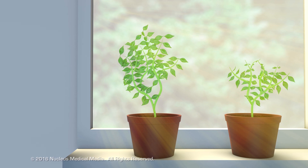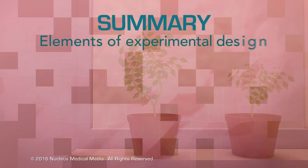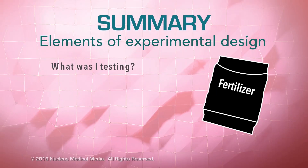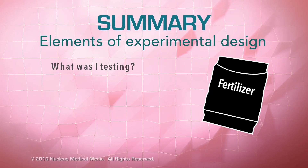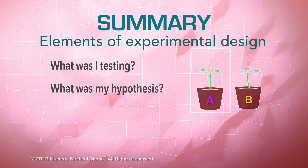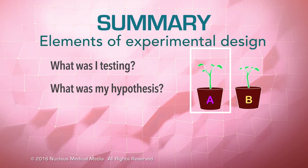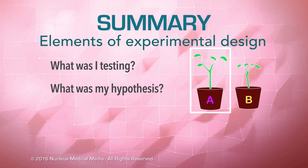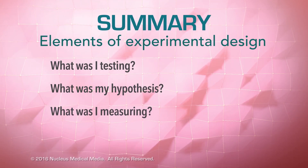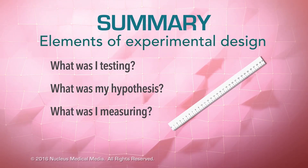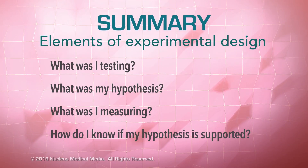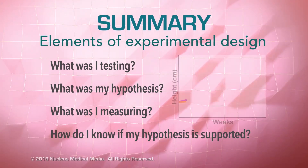So let's recap the elements of experimental design. What were you testing? You were testing to see whether or not fertilizer promotes plant growth. What was your hypothesis? The hypothesis was that the plant that got fertilizer would get bigger than the plant that didn't get fertilizer. What were you measuring? You measured the growth of both plants.